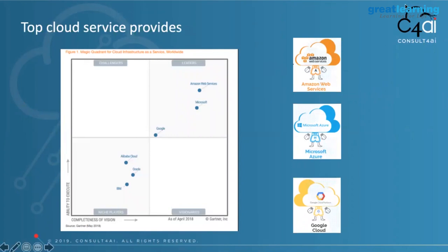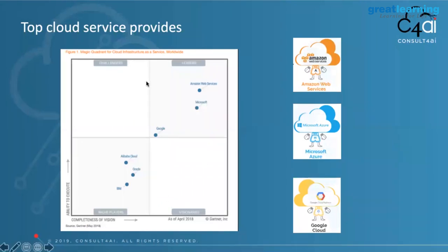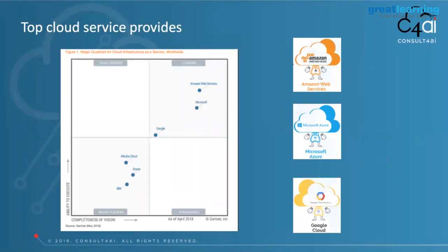The top cloud providers trying to get a piece of machine learning and cloud are Amazon Web Services, Microsoft Azure, and Google Cloud. According to the latest Gartner report from July 2019, AWS has stood in the leaders quadrant for the past nine years continuously. The X-axis is completeness of vision and the Y-axis is ability to execute - showing AWS has the infrastructure and resources for execution.